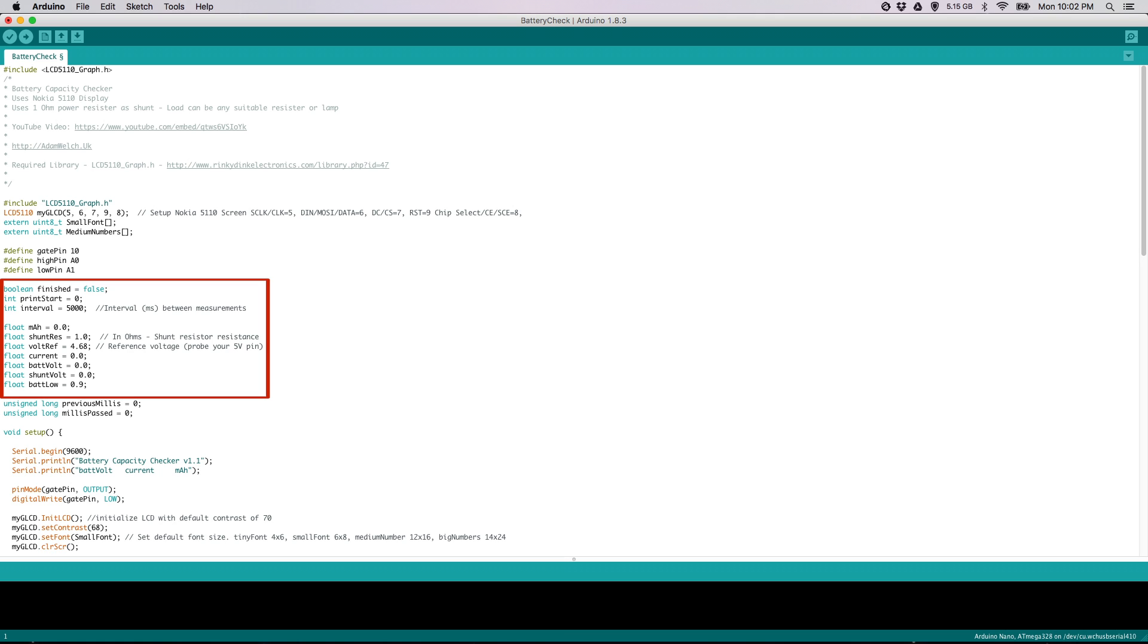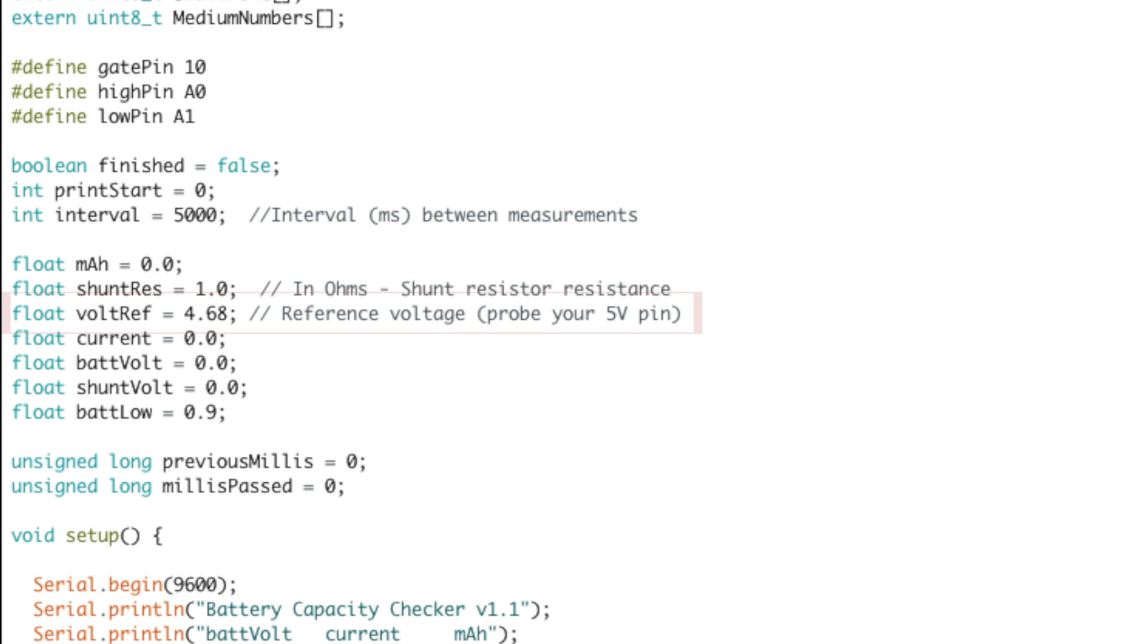Shunt resistance, reference voltage, and so forth. Make sure that you check your reference voltage between the 5 volt and the ground pins, otherwise your calculations may be off and that'll give you faulty data back. I got a reading of 4.68 volts from my nano, but your mileage may vary.